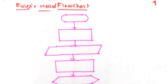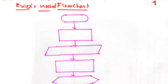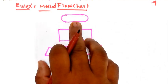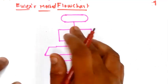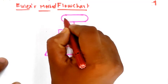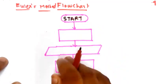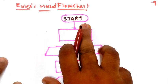Hello everyone. In this video we are going to see the flowchart procedure for Euler's method. These are the important steps in the flowchart that we are going to see. Here is the symbol for starting — this is the start of the flowchart.